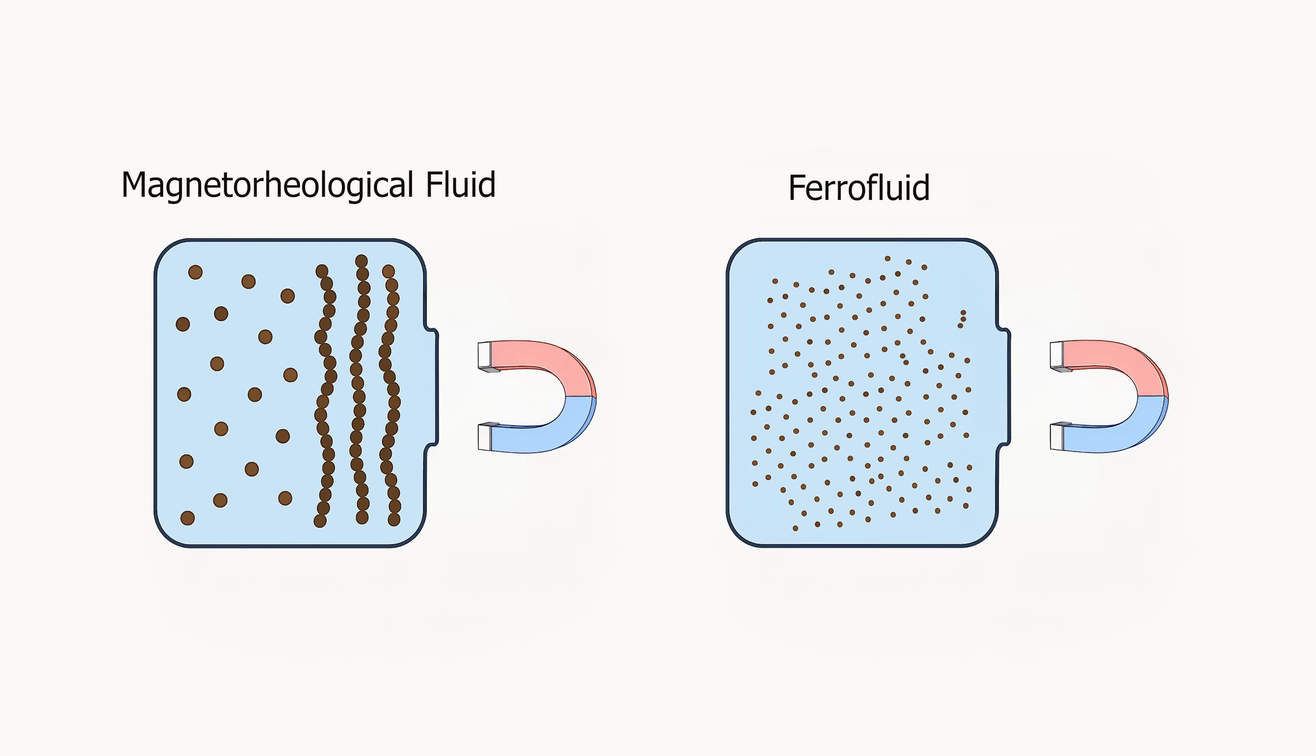But ferrofluid is just tiny particles of iron in a fluid as well. So why doesn't it get thicker? Well, ferrofluid particles are thousands of times smaller than the magnetorheological fluid particles. Ferrofluid has nano-sized particles. They're so small that the natural jiggling of molecules and atoms from the Brownian motion keeps the chains from forming.